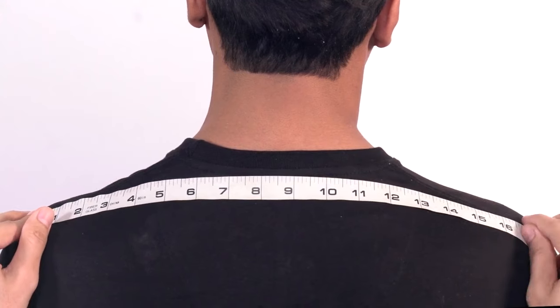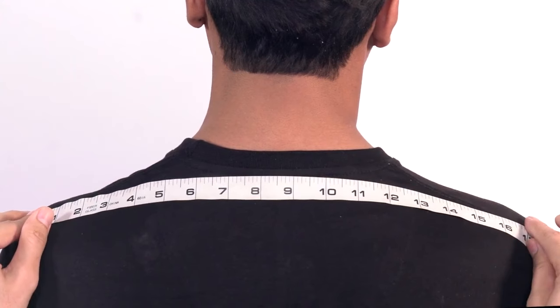For shoulder width, place the tape from the left shoulder's edge across the back of the neck to the right shoulder's edge.